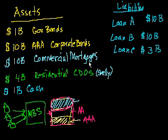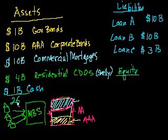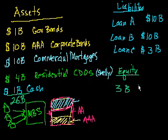In this example, if we assume all asset values and liability values are correct, what is this bank's equity — its shareholders' equity? Its assets total 26 billion and its liabilities are 23 billion. So 26 billion of assets minus 23 billion of liabilities means we have $3 billion of equity — shareholders' equity.